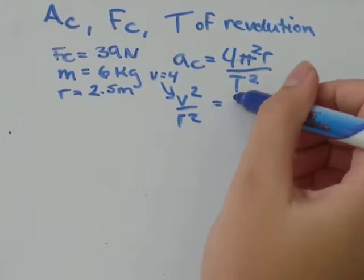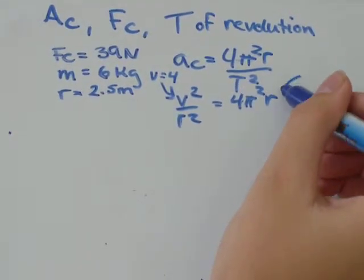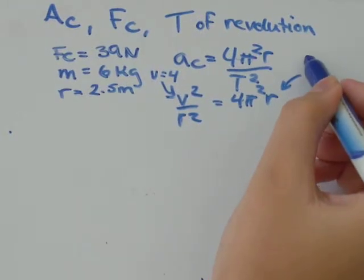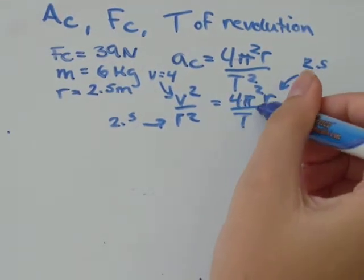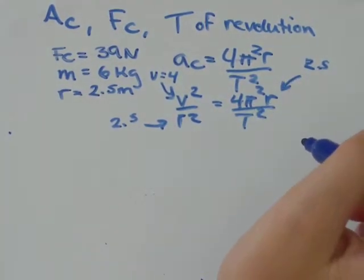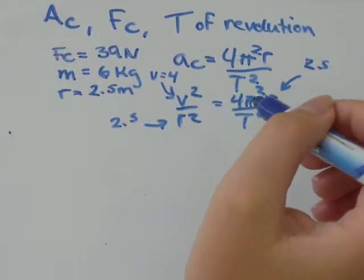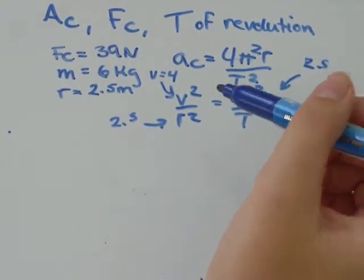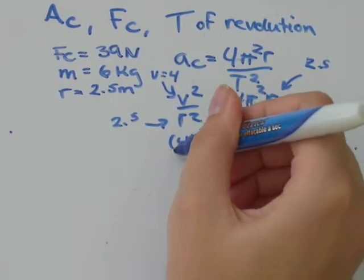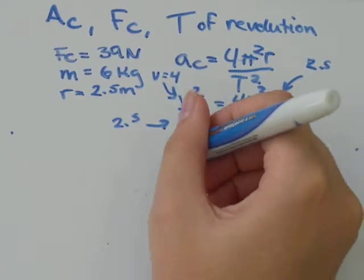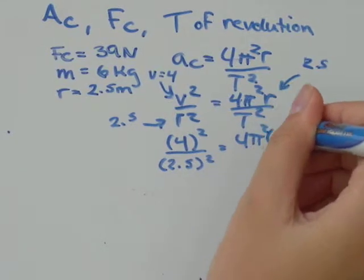We're given r. 4 is just a number. Pi squared is just a number. We know r is equal to 2.5, same as this r here. So we have everything we need to be able to solve for the period. So I'm just going to plug in all of the values we have for the variables that we know. So v squared, v was 4, so v squared would be 4 squared over r, which would be 2.5 squared equals 4 pi squared times 2.5 over t squared.